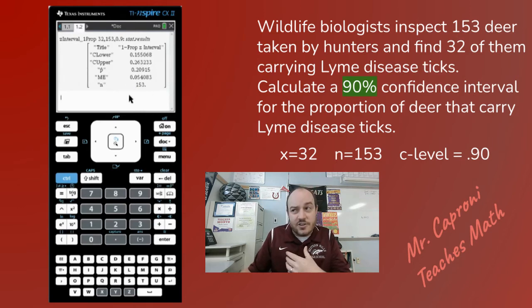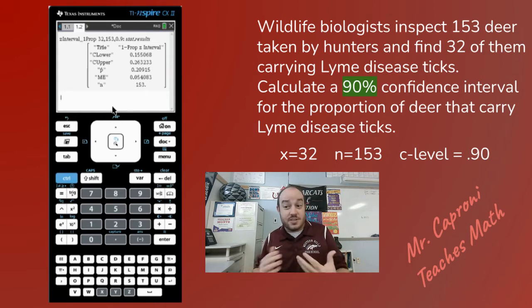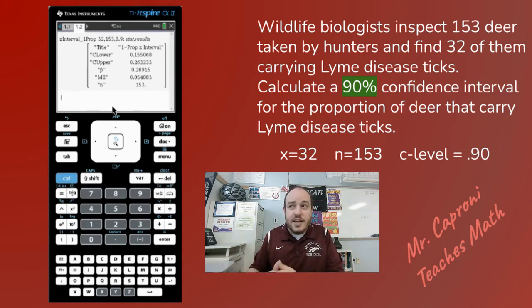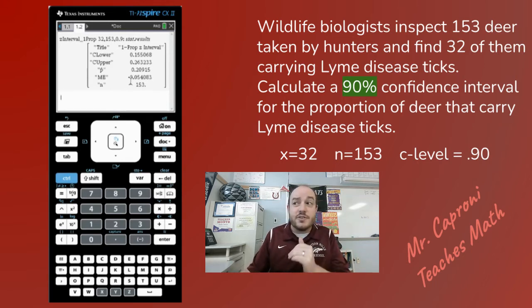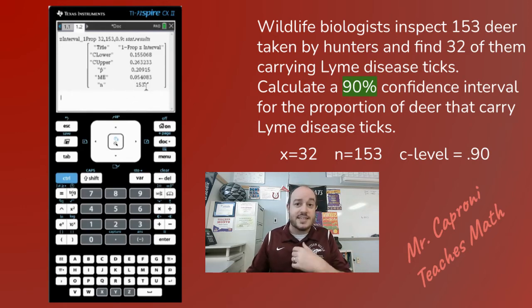Once you have that, hit OK and here's our answer. The big ones are your C lower and C upper — that's the actual confidence interval. P-hat is just the probability of success for this sample; they divided 32 by 153. The lower and upper are found by taking that P-hat and adding and subtracting the margin of error. The calculator finds that for you, and in this case the margin of error is 0.054083. It also shows N, the sample size we entered.